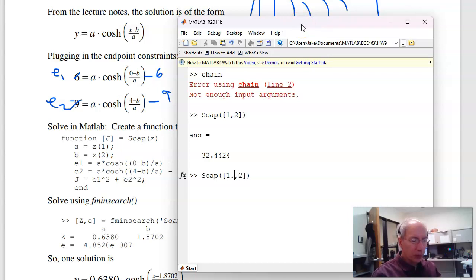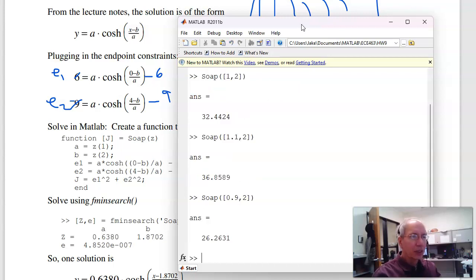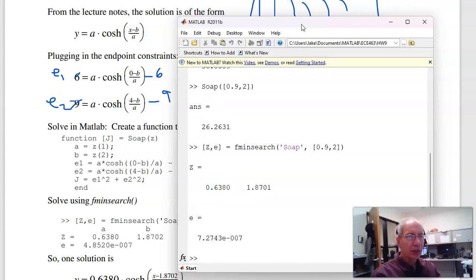So 1, 2 is wrong. Let's try 1.1, 2. That got worse. Let's try 0.9, 2. Better, keep iterating until I get to 0. Or let fminsearch search for you. Minimize this function with that initial guess. Let her run and poof, there's your answer. fminsearch is actually really impressive.